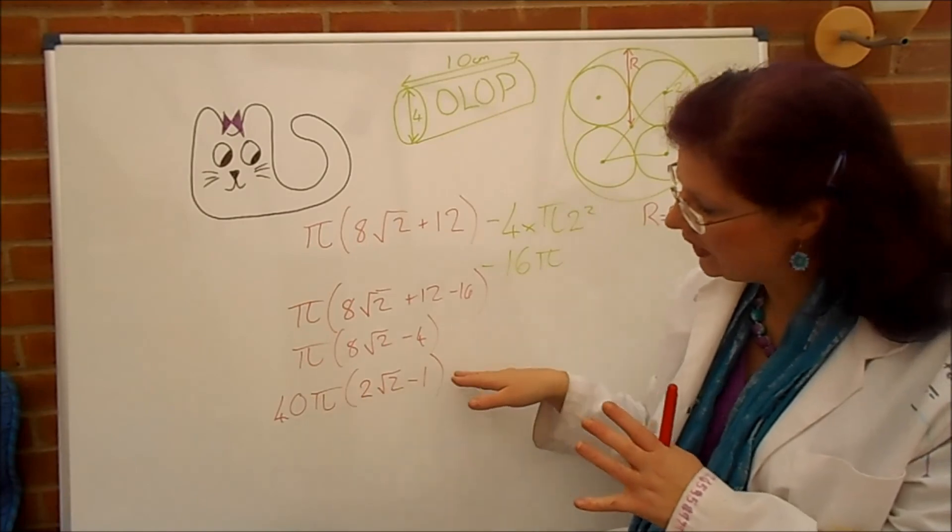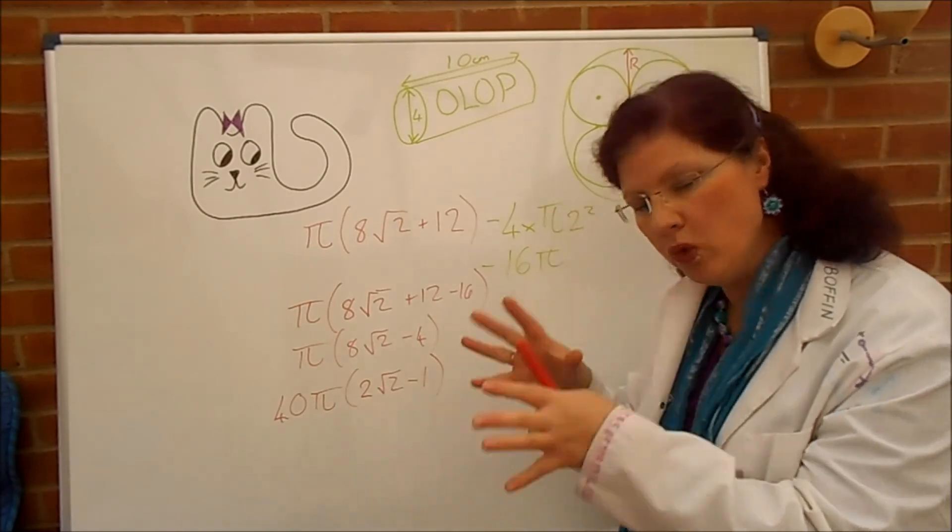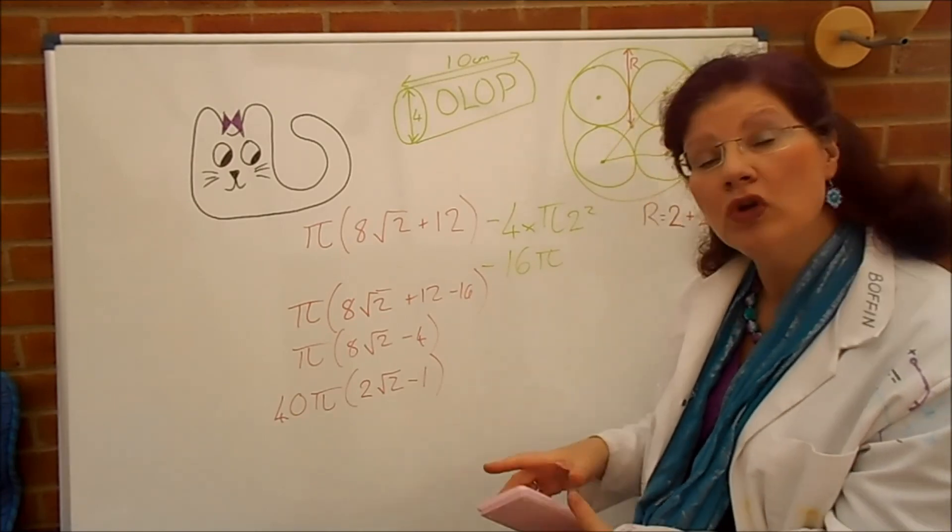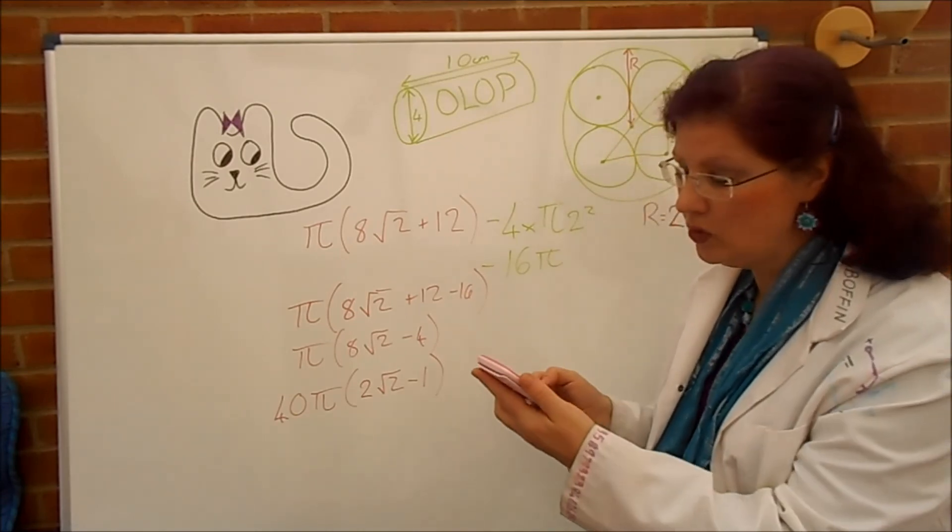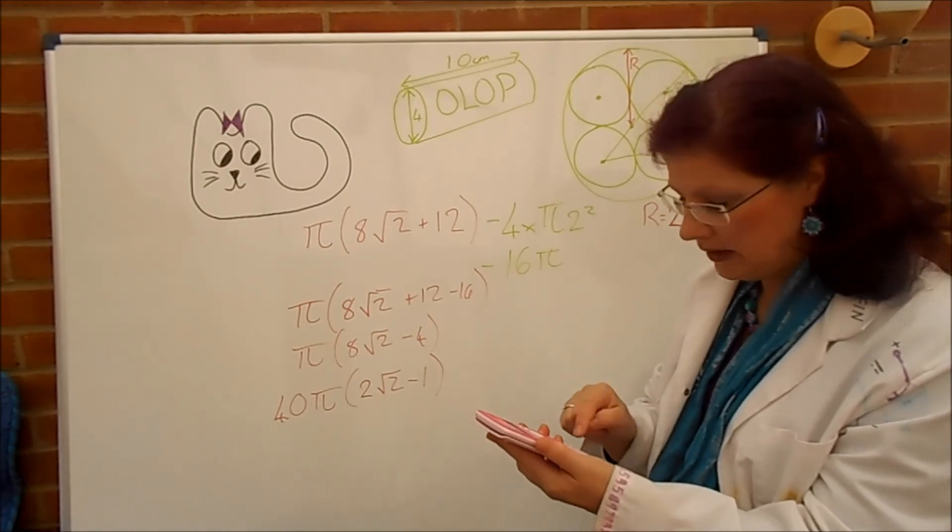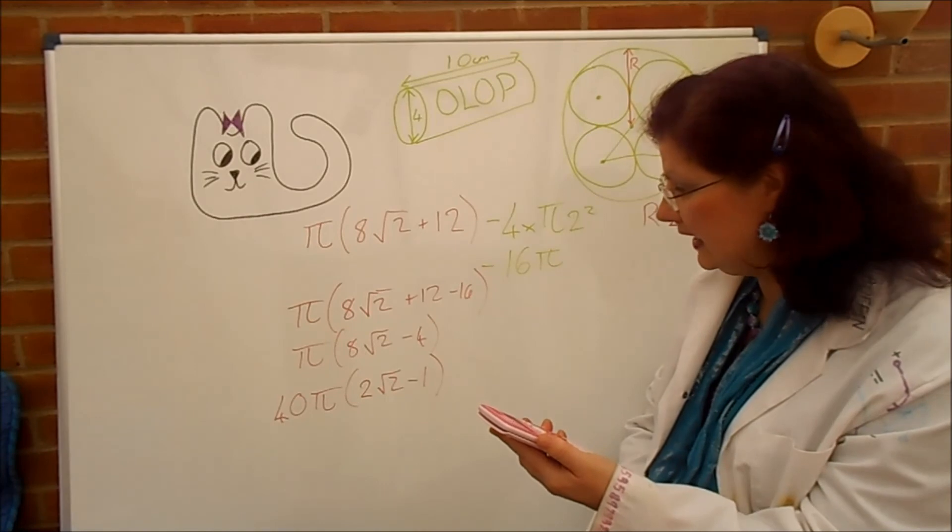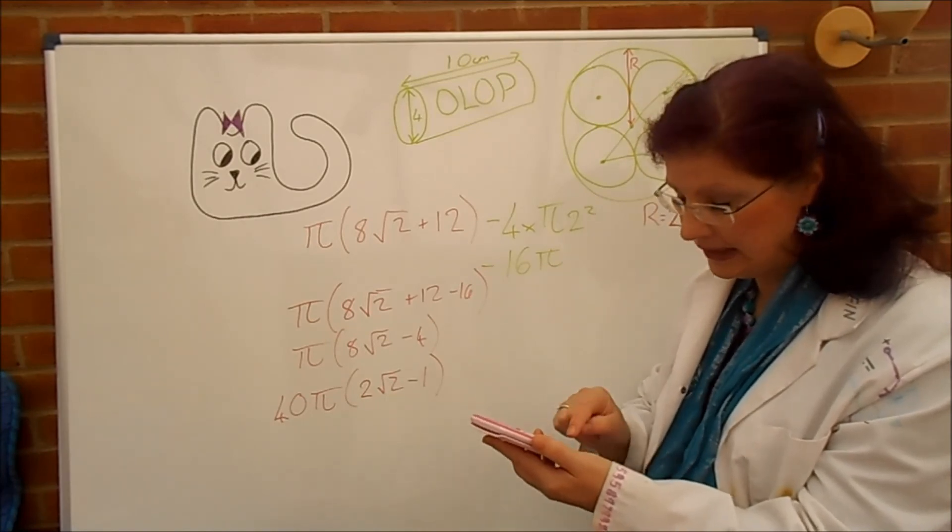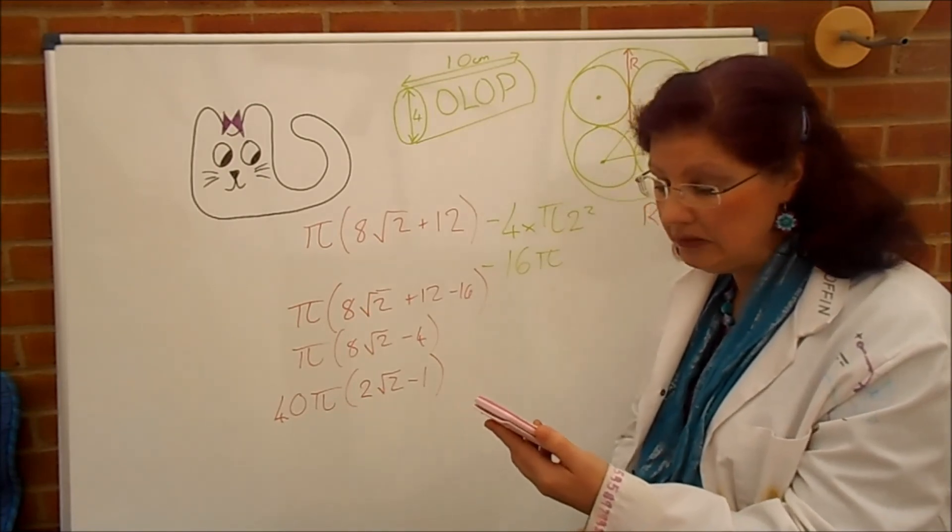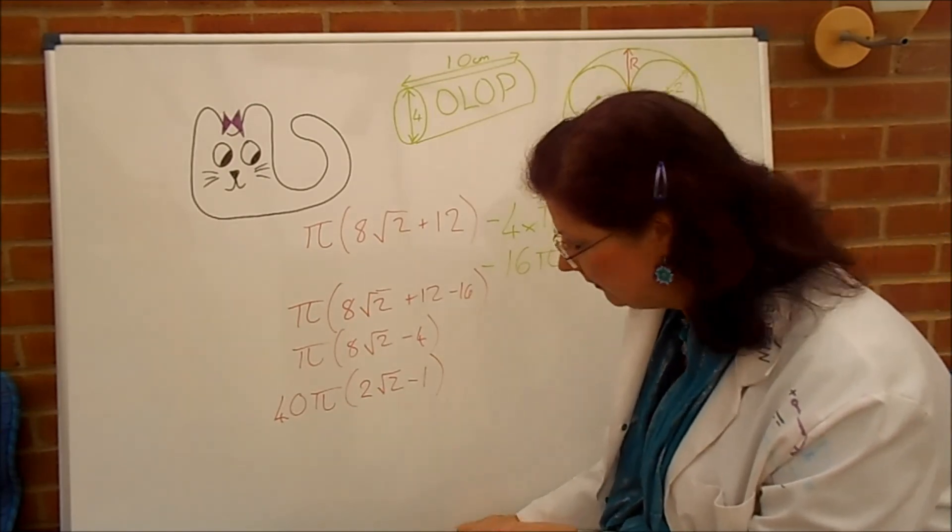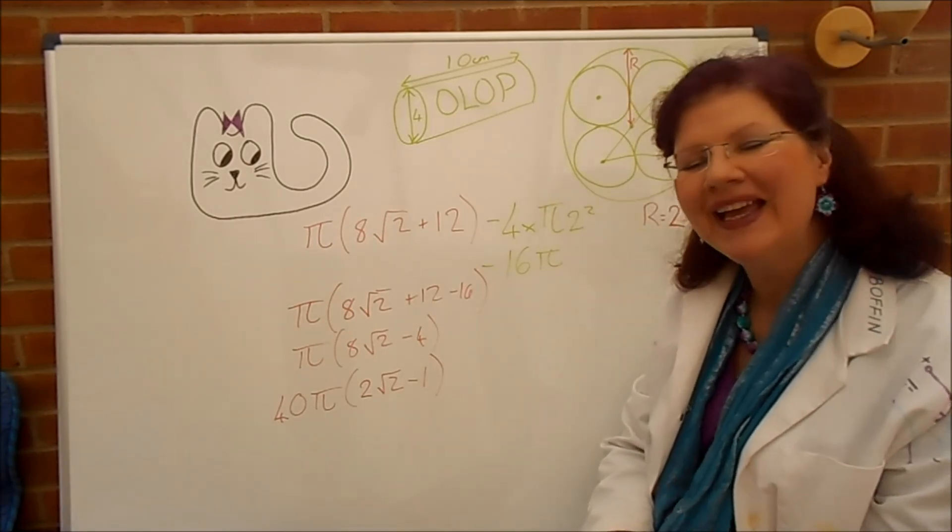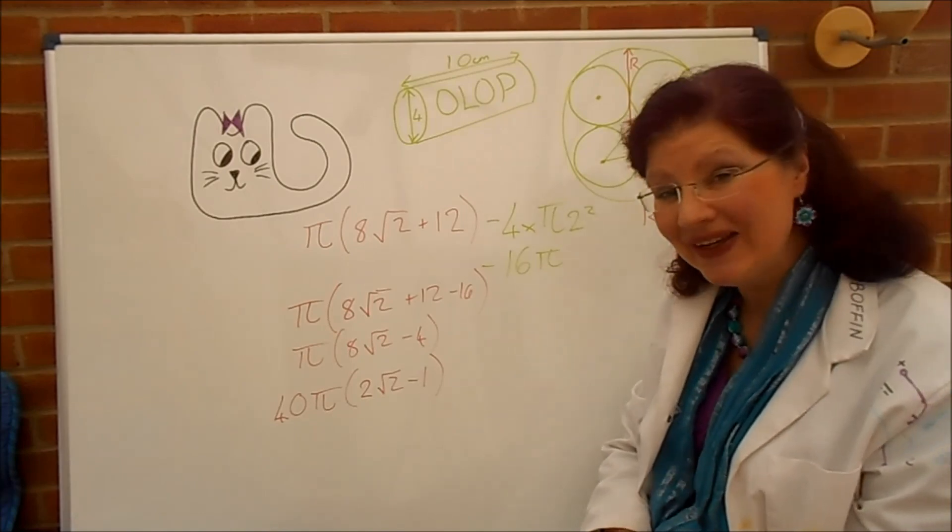So, you can do that if you want that way or the other way is fine as long as you've got one term that's got a root two in it and one term that hasn't got a root two. If you wanted that in decimals let's just work out what that is. We've got a two times root two, take away one is that, multiplied by 40 is that, and multiplied by pi gives you 229 and a bit, 230 cm cubed. But for this question we wanted the answers in surd form. Okay, I hope you had some fun with that. I will see you next time Batty fans.